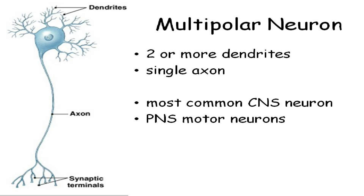Here's the soma — you've got a bunch of dendrites coming off, one axon which may have an axon collateral, and then a bunch of axon terminals each ending with synaptic terminals. Most of your neurons are multipolar neurons, and that's why we usually talk about them first and base everything else on this model.